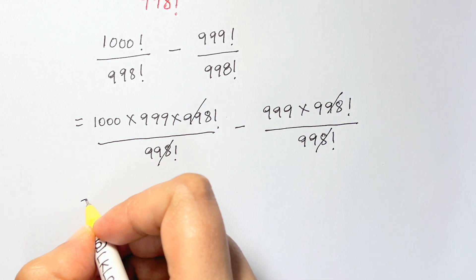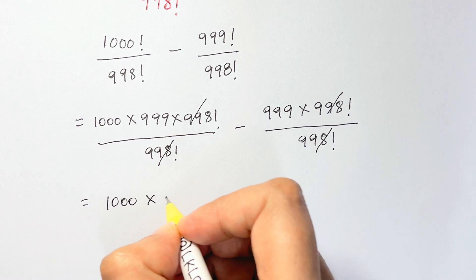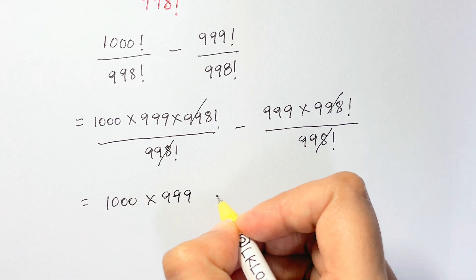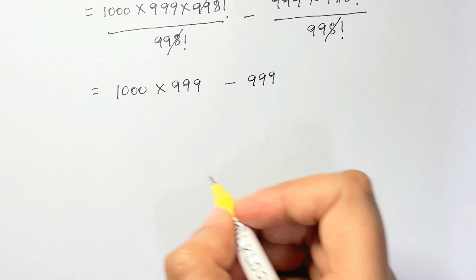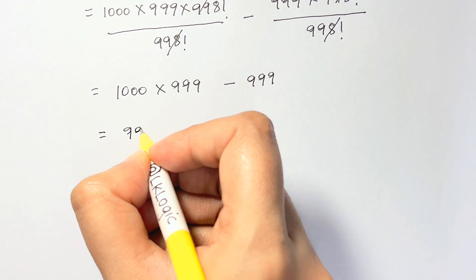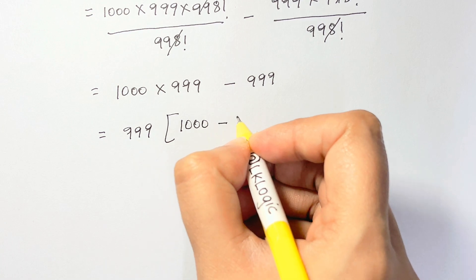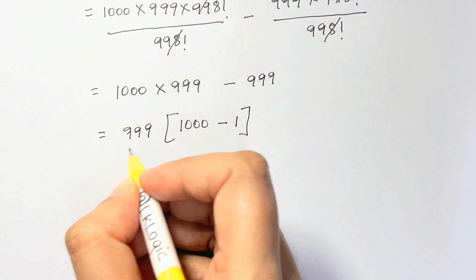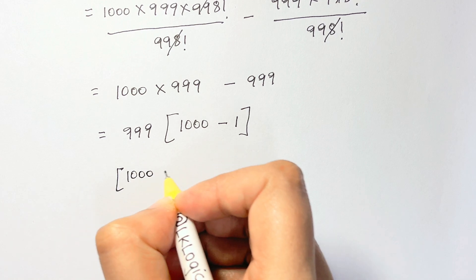This and this gets cancelled, so the factorials cancel out. We're left with 1000 times 999 minus 999. We can take out 999 common, so we're left with 999 times (1000 minus 1).